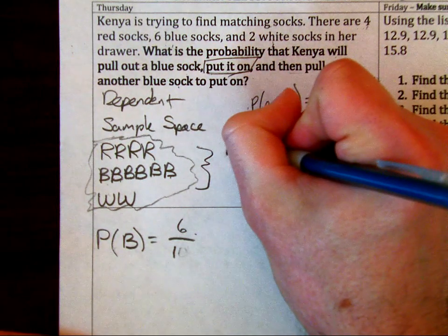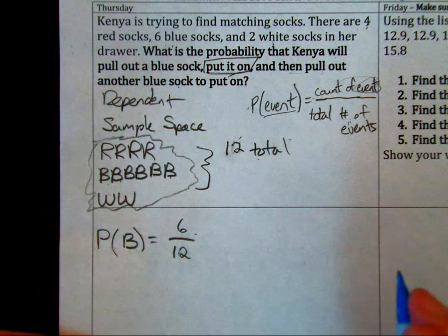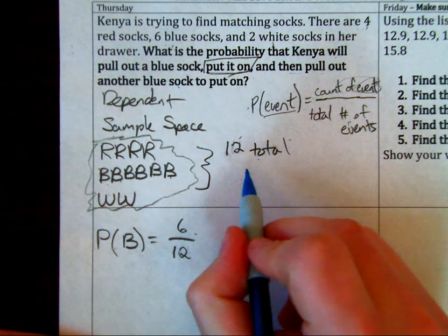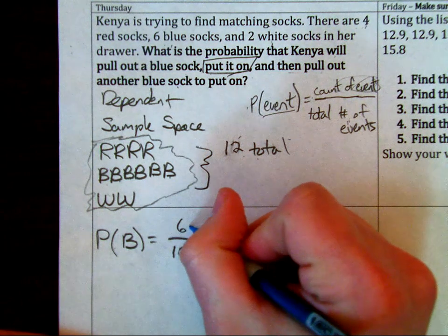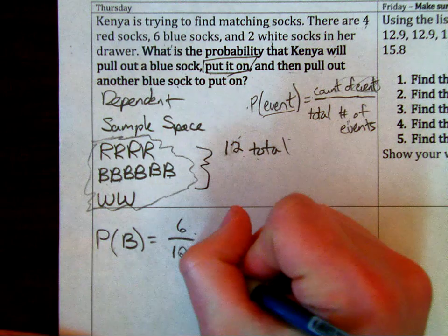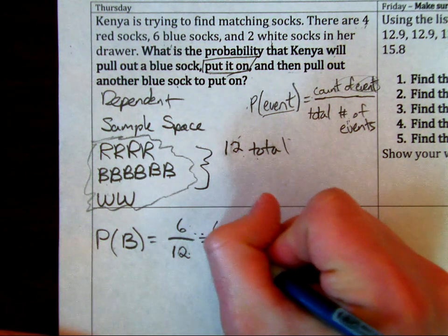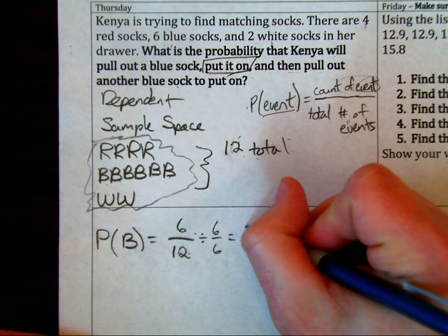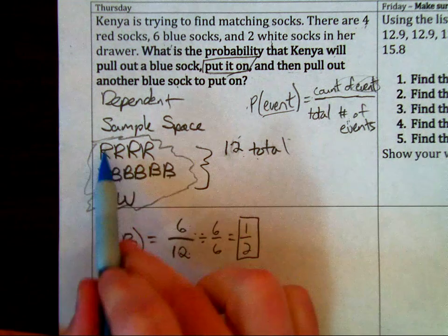Counting correctly this time, there's 12 total. So be very careful, double check yourself. We have 12 total. That means 6 of them are blue, 12 total. I can simplify this fraction, dividing by the common factor of 6, so I'd have 1/2. The probability of pulling out a blue sock is 1/2.